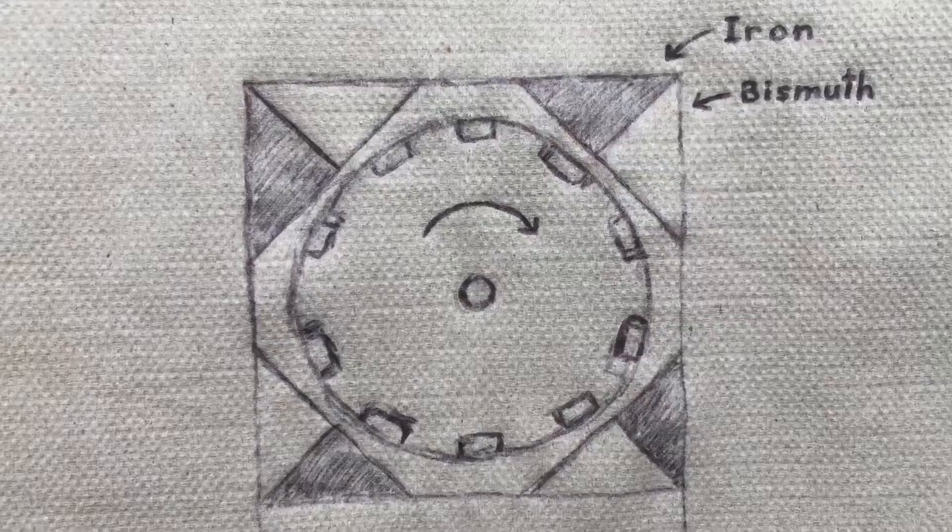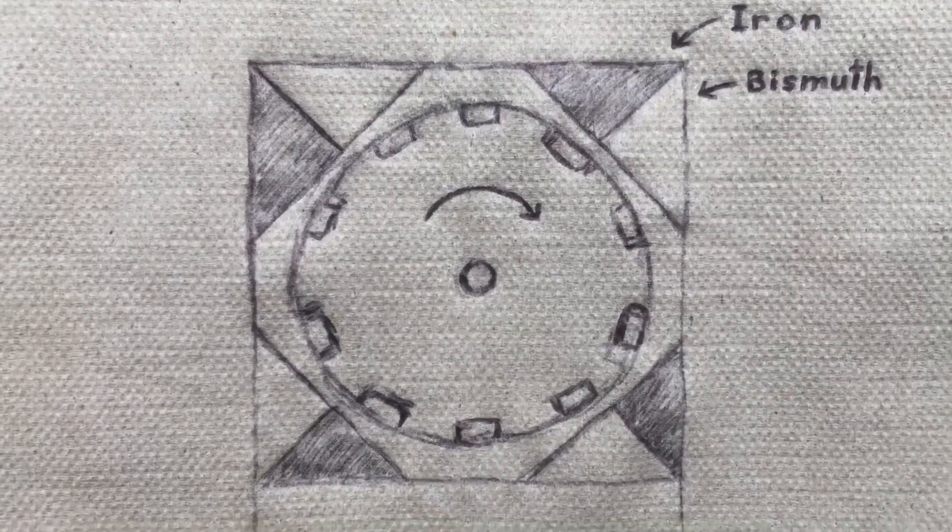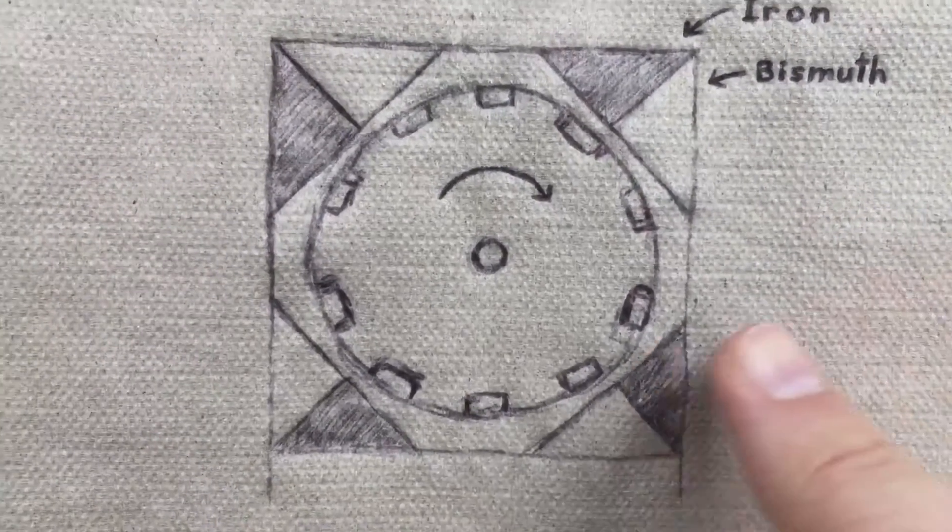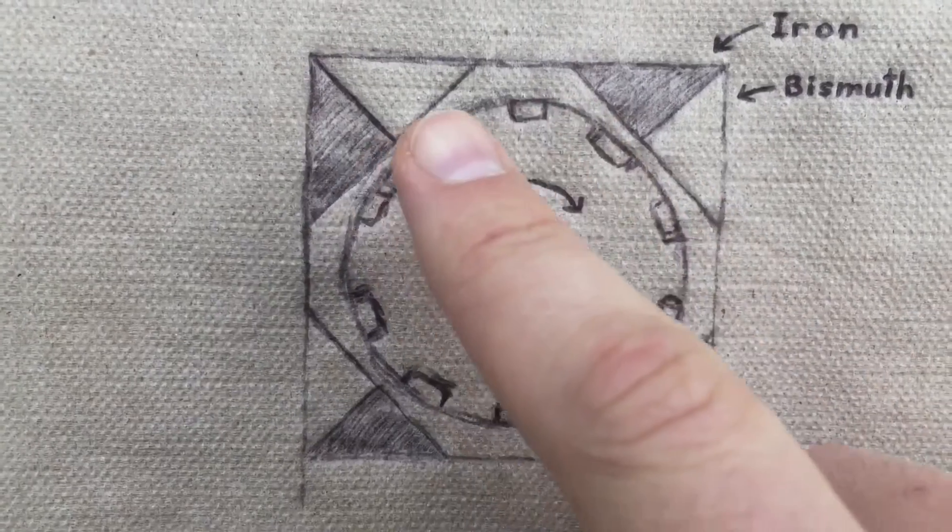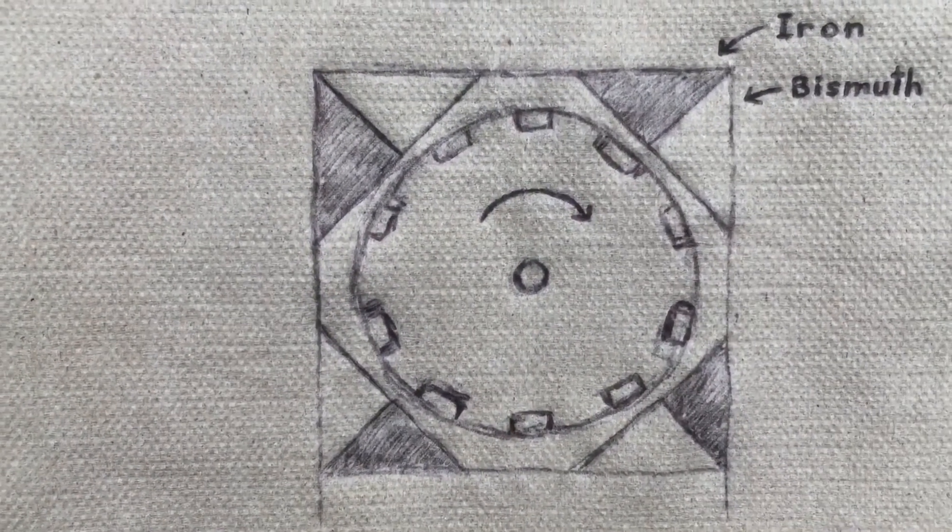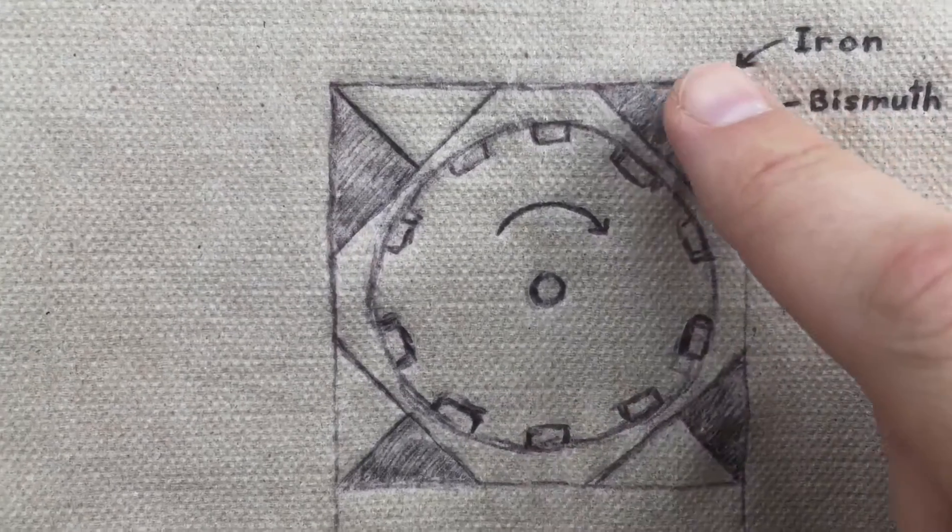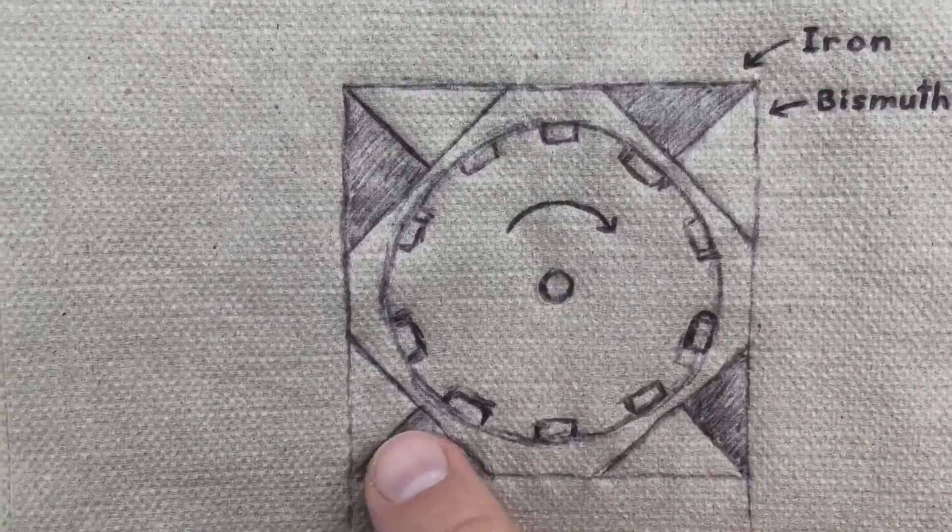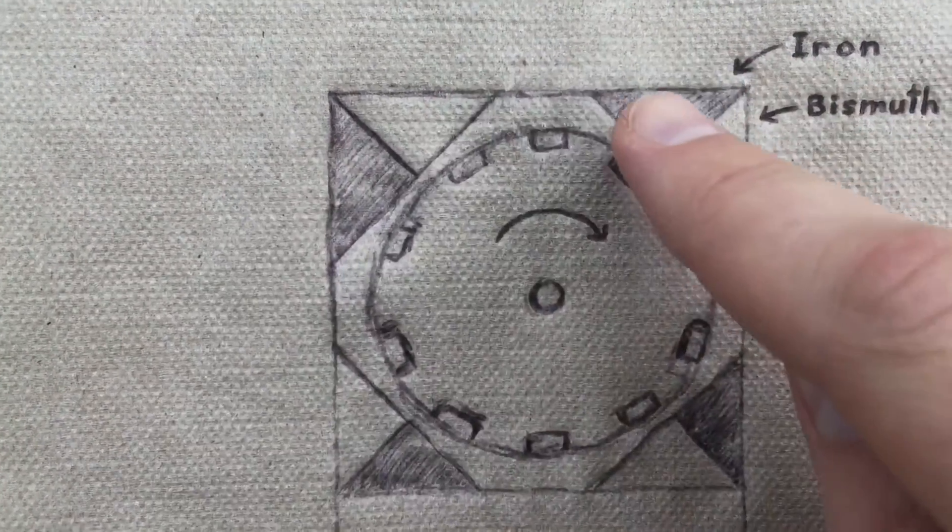So let me just show you this picture I sketched out really quick. It's really simple. Basically, this wheel in the center has magnets all around it. It doesn't matter which direction they're facing.